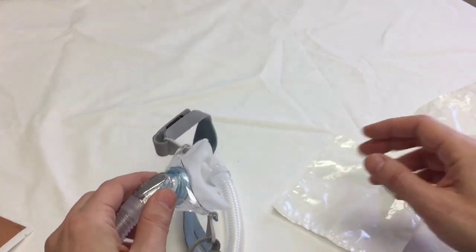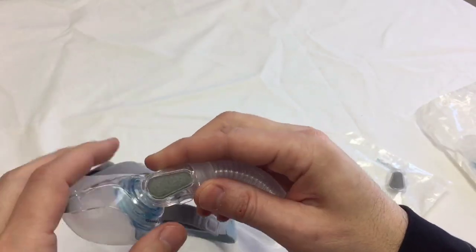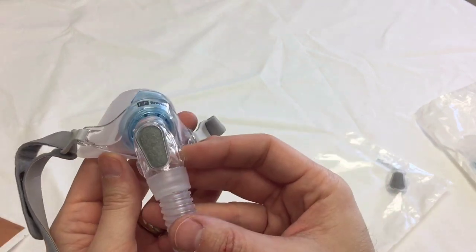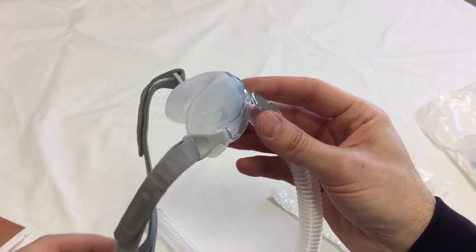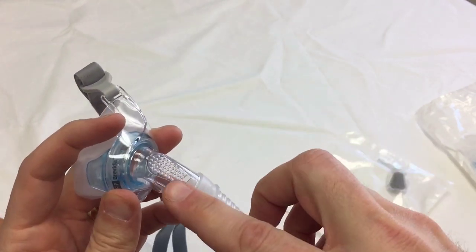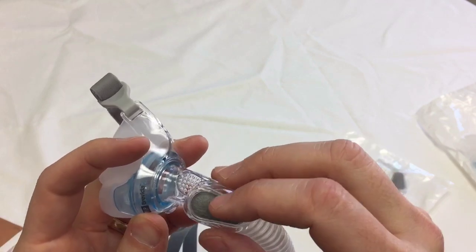That's the washable diffuser filter, and we'll get a better close-up look at that. So this piece right here is the diffuser filter. Right there, it snaps on and off, and there's the exhalation ports behind it. You can use the mask without it.